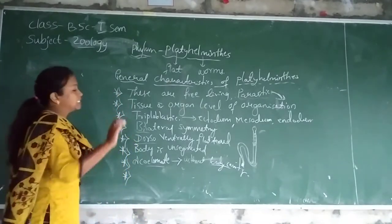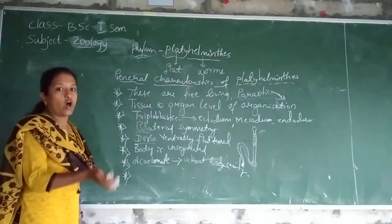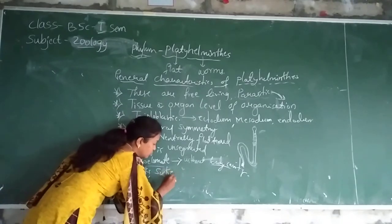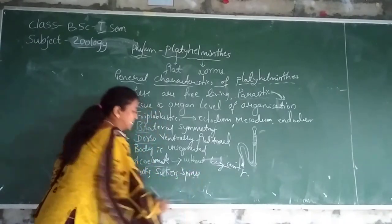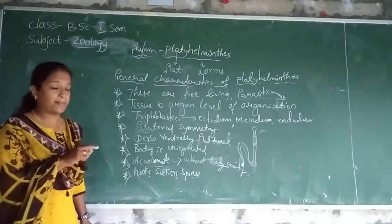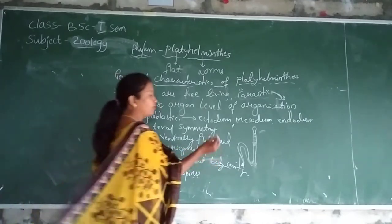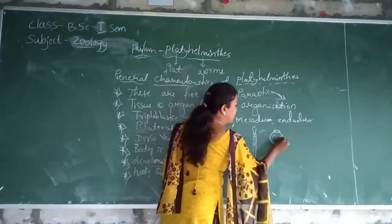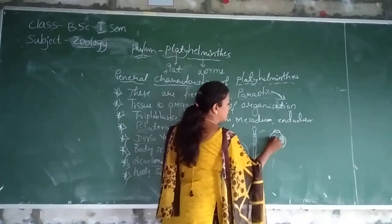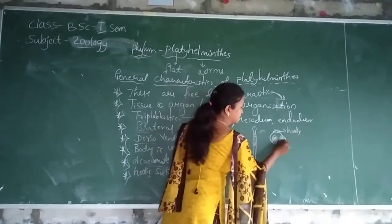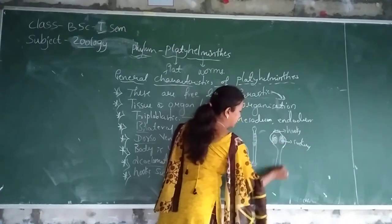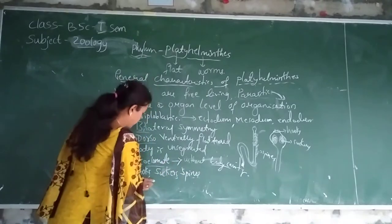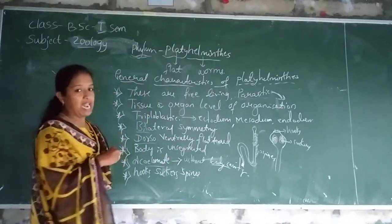The next one is they have specialized characters for attachment or getting food. Those are: one is hooks, another one is suckers, and another one is spines. These are the three main special structures present on the body of platy elemntis. Hooks, suckers, and spines are present on the body of platy elemntis.